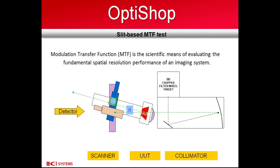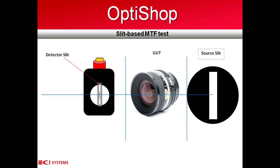We then rotate the main rotation stage in order to scan for the image in the lens field, while correcting the scanner position to meet the shifted image. In the next slide, we see the collimator on the right-hand side.